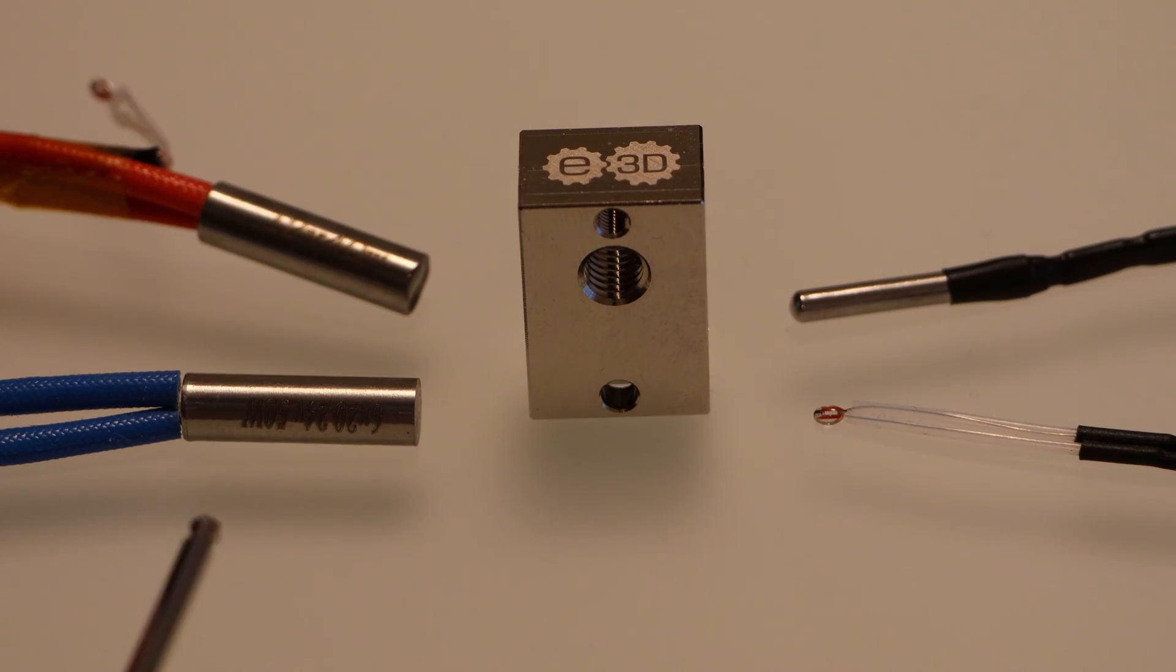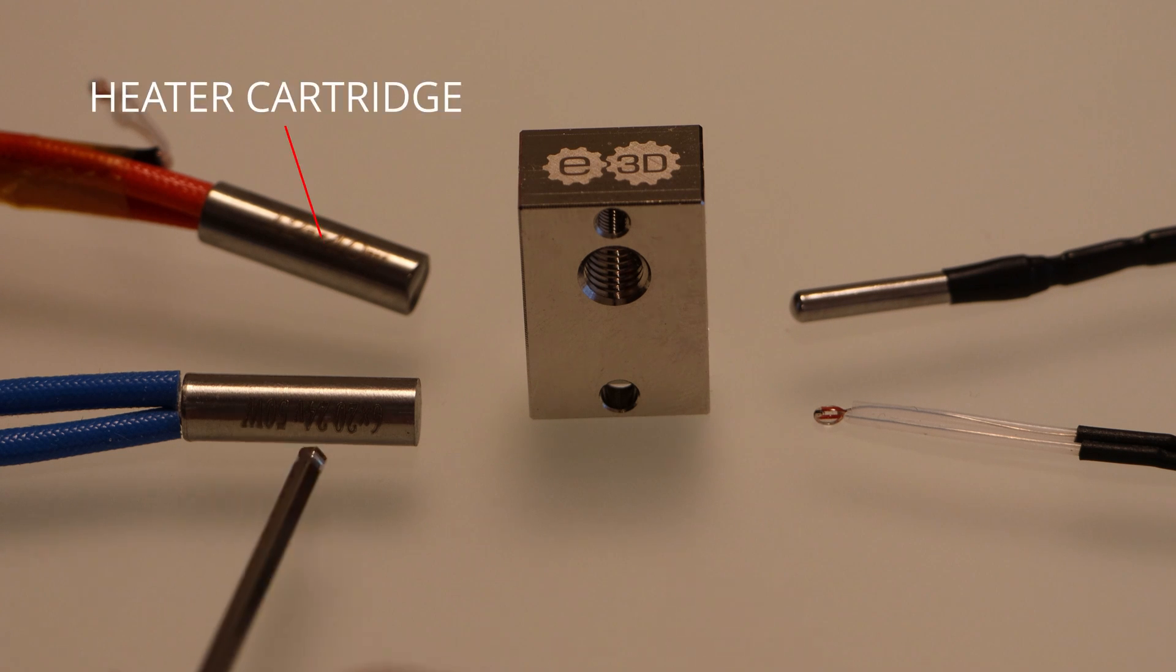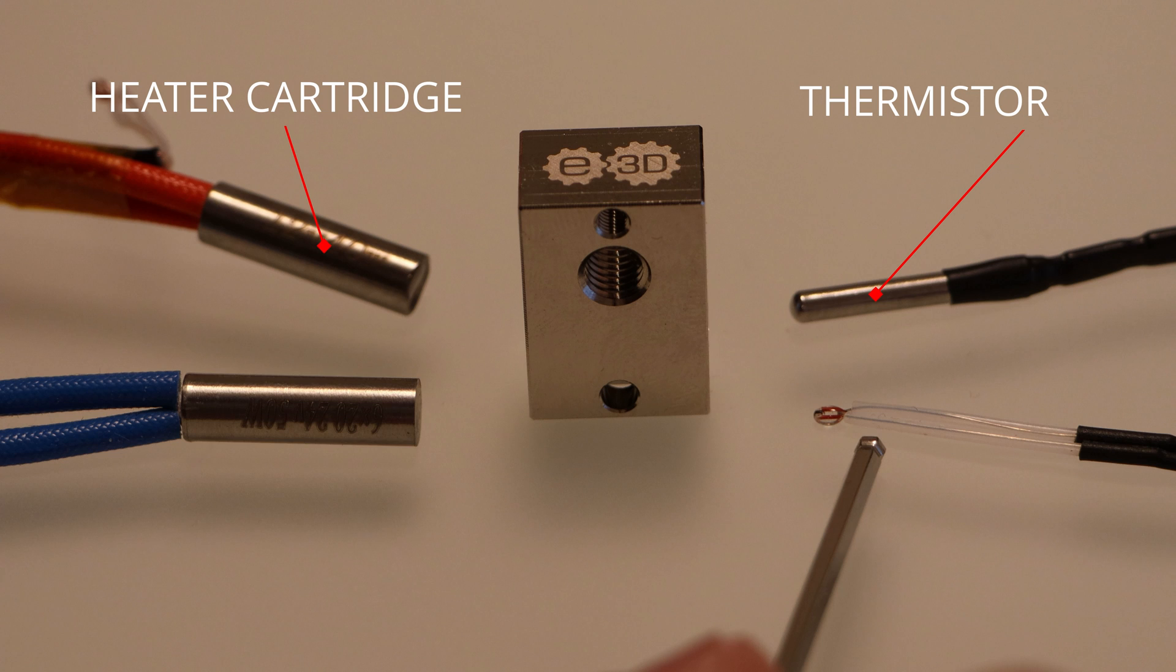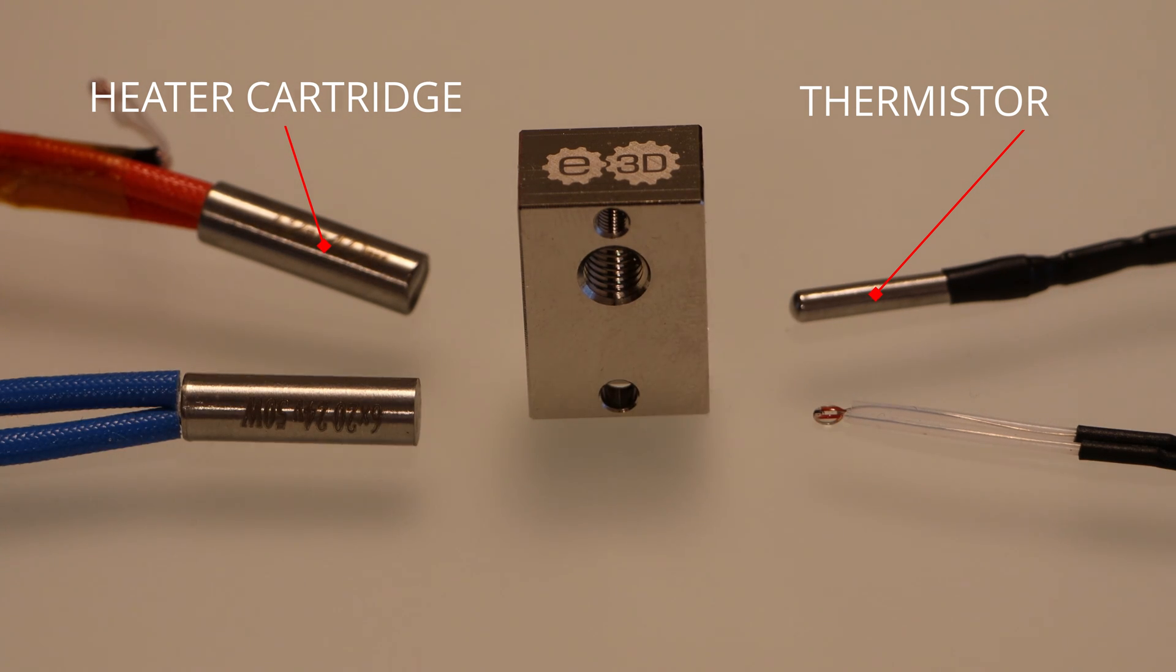Two electrical components are installed into your heater block in order to control the temperature. This consists of a heating element and a temperature sensing element. The motherboard of your printer runs a PID loop, which controls the temperature of your heater block, just like a thermostat controls the temperature of your house.